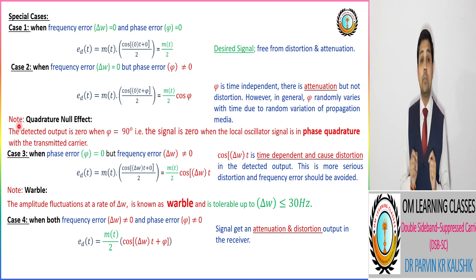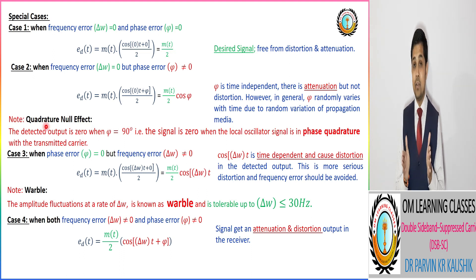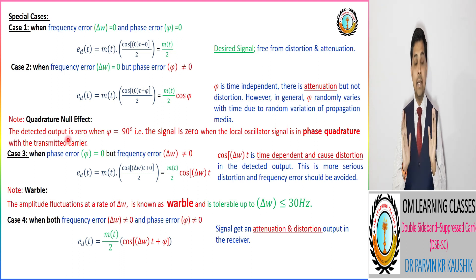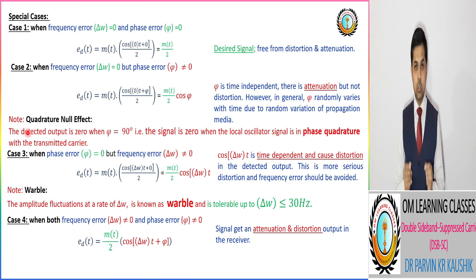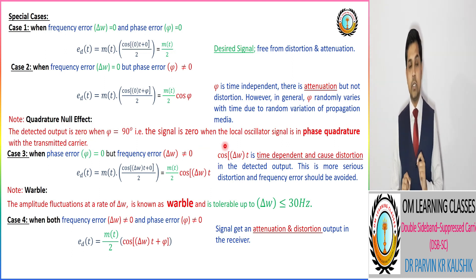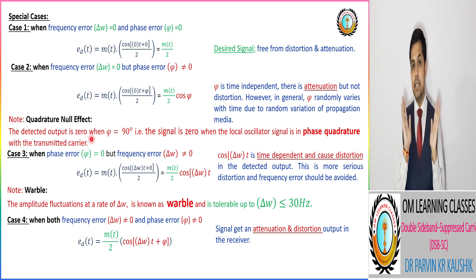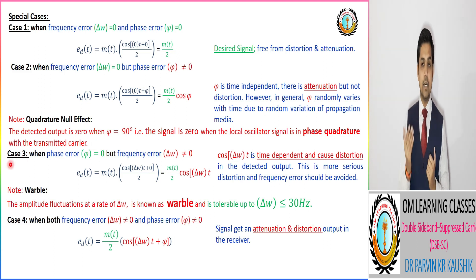A very important point here is the quadrature null effect: if the phase error φ equals 90 degrees, then the detected output is zero. This effect is known as the quadrature null effect. If φ = 90°, the received signal e(t) equals zero.